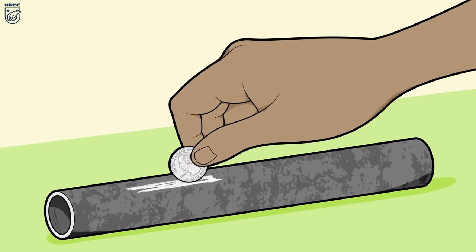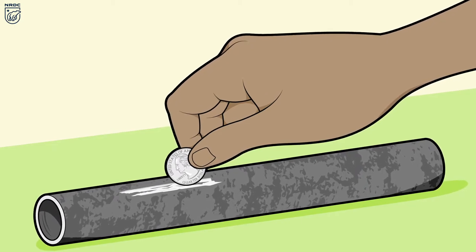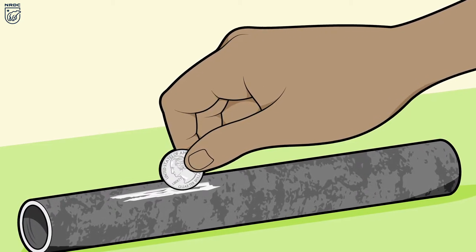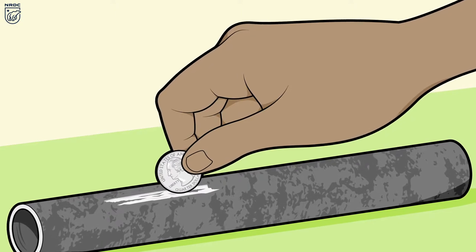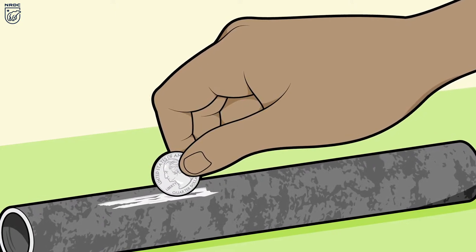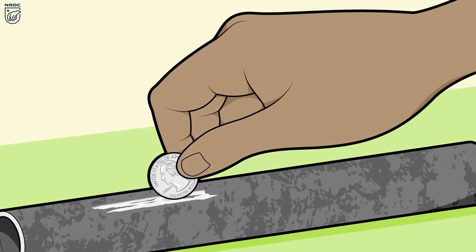You may have a lead service line if the water pipe coming into your home from outside is grayish in color, a magnet won't stick to it, or when you scratch the pipe with a coin, it leaves a shiny, silvery mark.